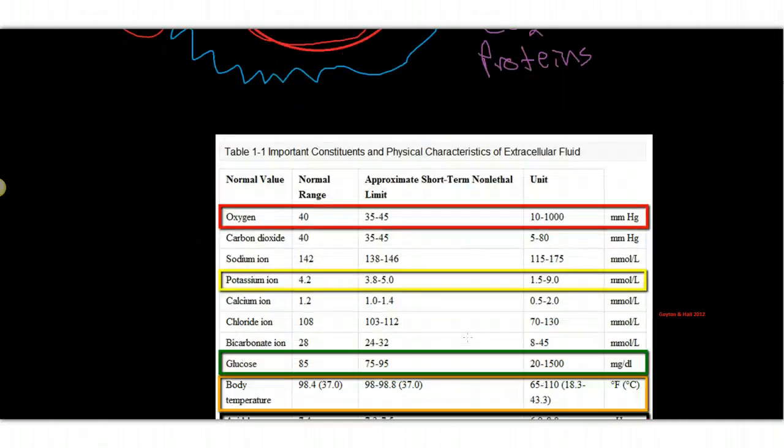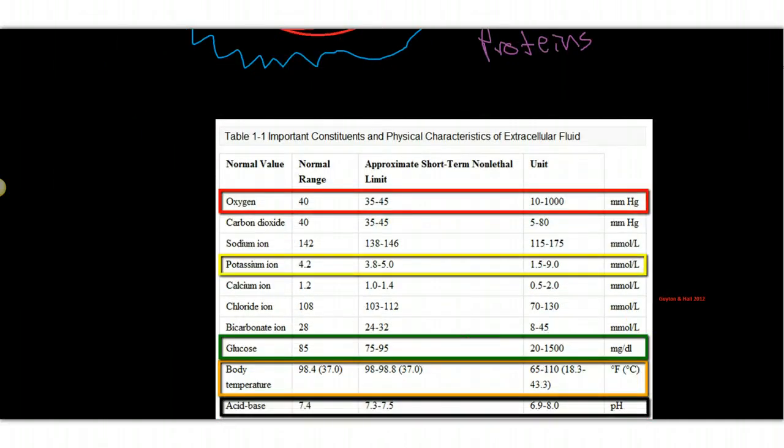And those elements are listed here in this table. And you can see here that the elements that are very critical to the survival of the cell are oxygen, certain electrolytes, sodium, potassium, glucose, the temperature of the fluid, and acid base.